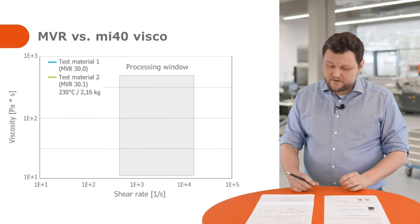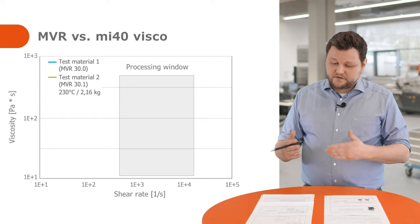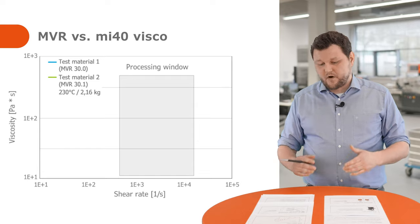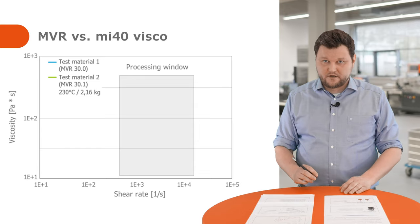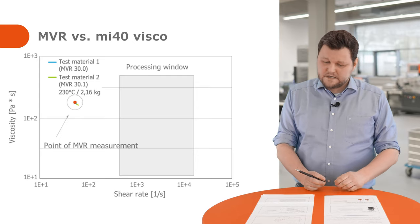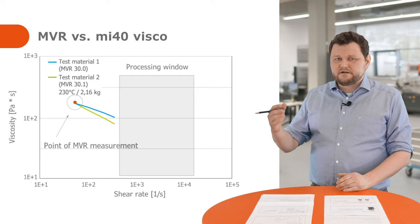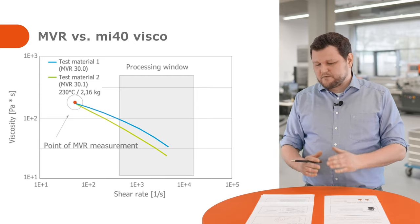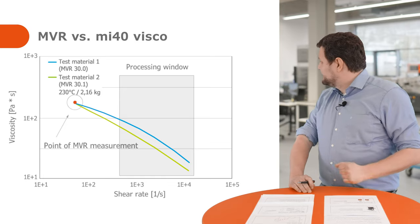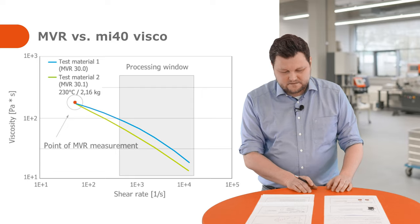Let's look at an application example with polypropylene at 230 degrees. A customer approached us — he had problems in his process. We first ran an MVR test, but we couldn't really see a difference. Both grades measured a value roughly of 30, so there was no separation there. Then we ran it with the MI40 VSCO option and there we could reach the far higher shear rates that are actually relevant for the process, and we could separate between both grades quite nicely, as you can see on the screen here.